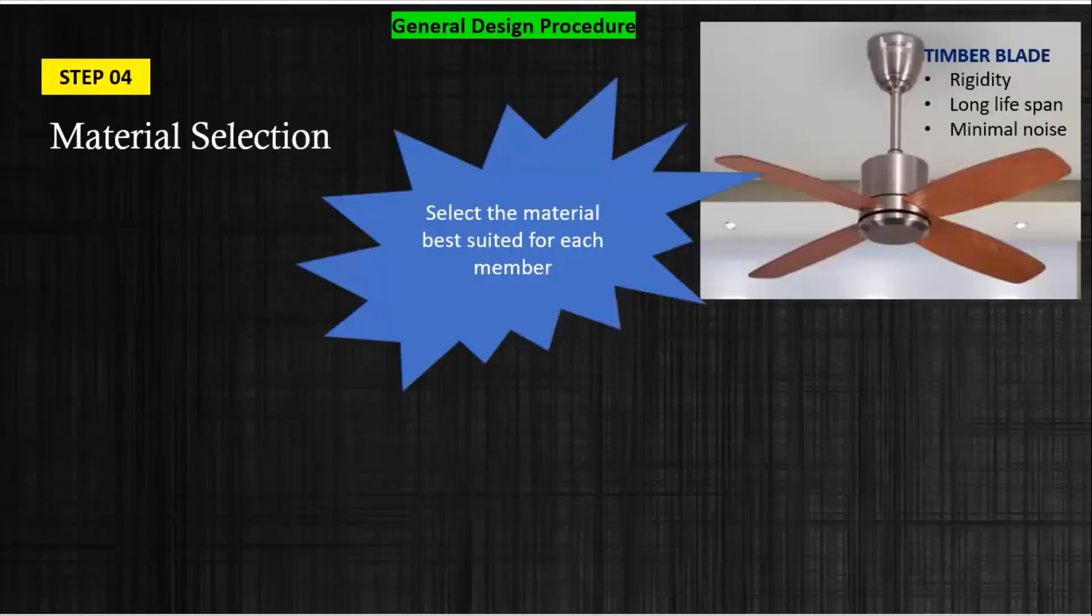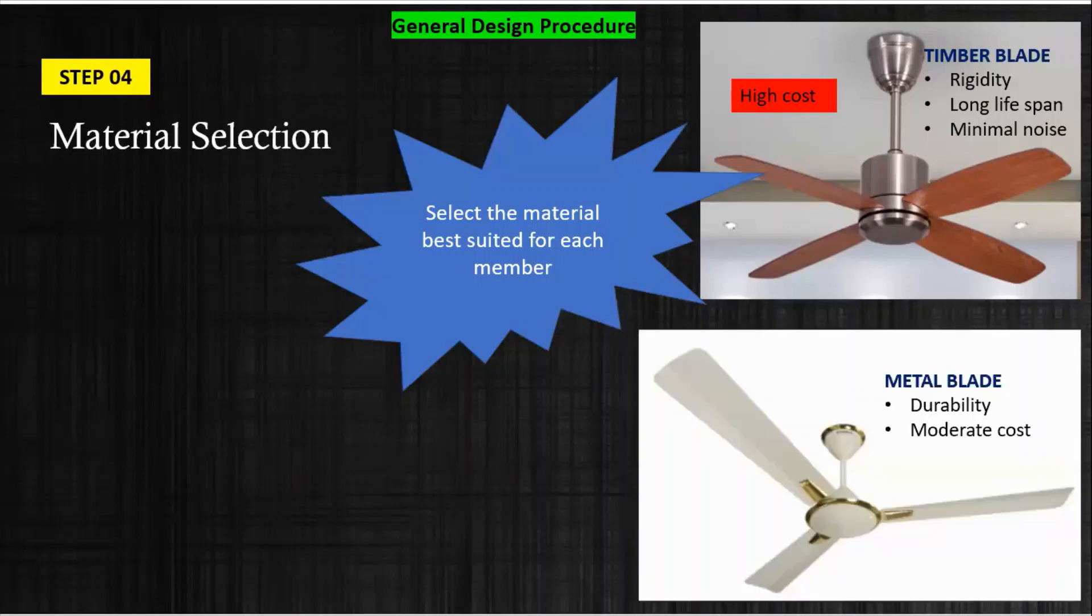I'll show you, if you see here when I show the blade which is made up of timber blade, this is the most common blade material. The reason is very simple: due to its rigidity, long lifespan, and it produces minimum noise. But if you see the other part, it is very costly.